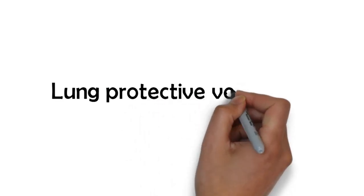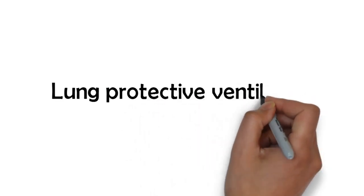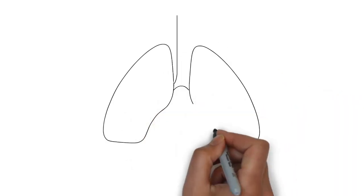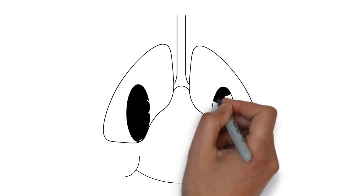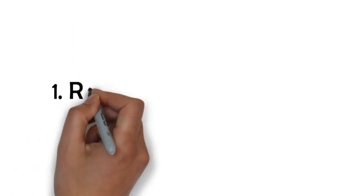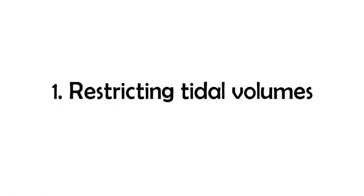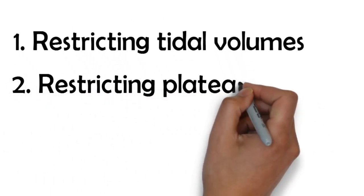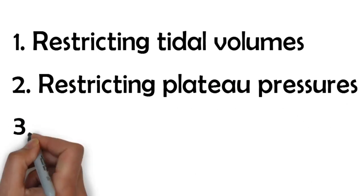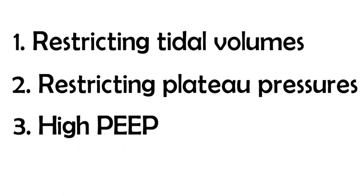You've heard about lung protective ventilation. It's a collection of ventilation strategies that we know are good for the lungs when a patient is at risk for lung injury. Lung protective ventilation has usually included restricting tidal volumes, keeping plateau pressures below 30 cm of water, and setting a higher level of PEEP.